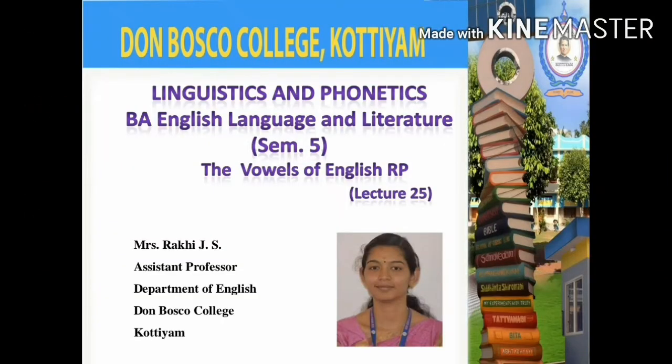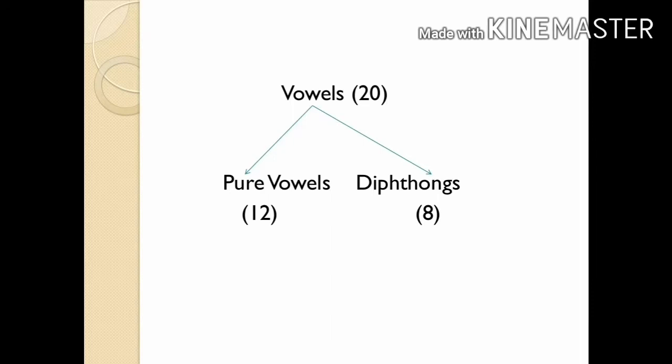Welcome to Bosco Campus Vision. In today's session we are going to discuss the vowels of English RP. English RP has 20 vowel sounds, 12 of which are pure vowels or monophthongs, and the other 8 are vowel glides or diphthongs.